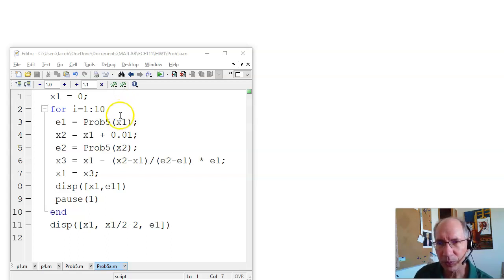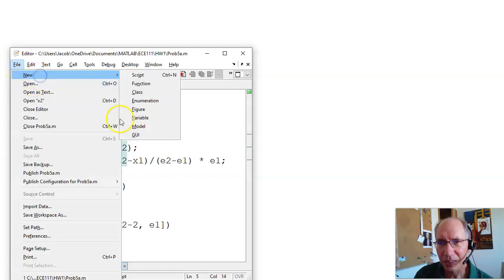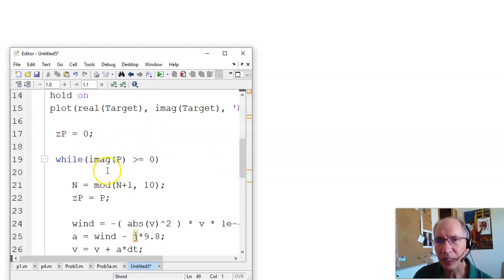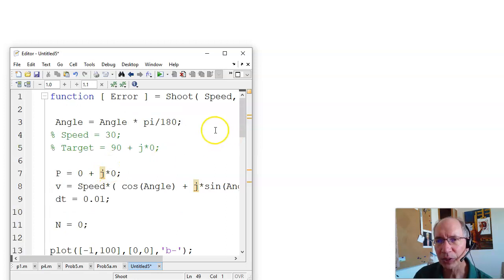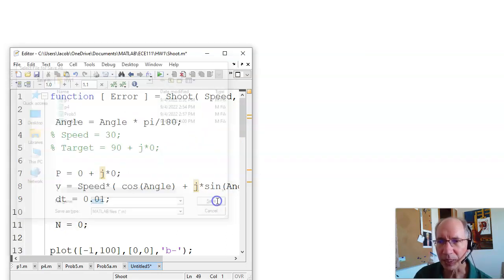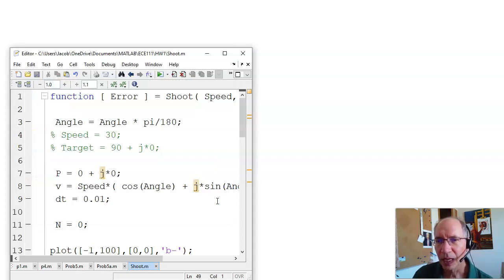Copy and paste that into MATLAB. I'm going to do a new file. So this creates a function called shoot. When I save it, I need to save it as shoot.m.